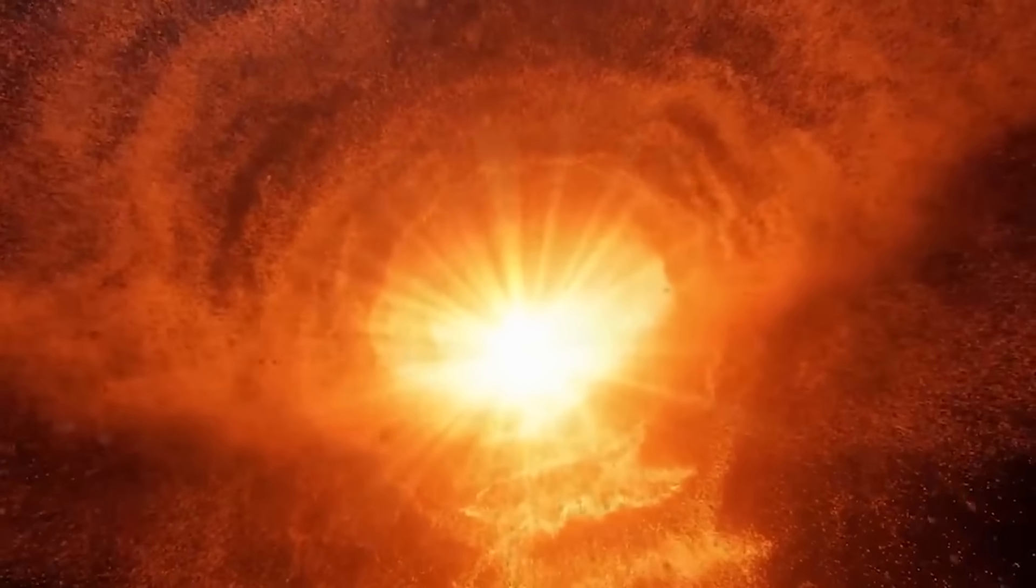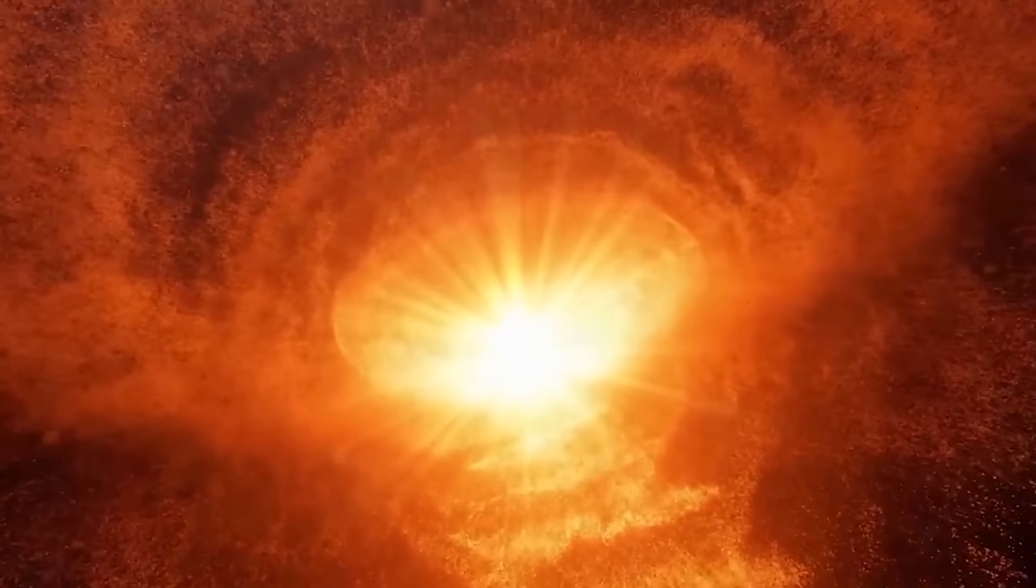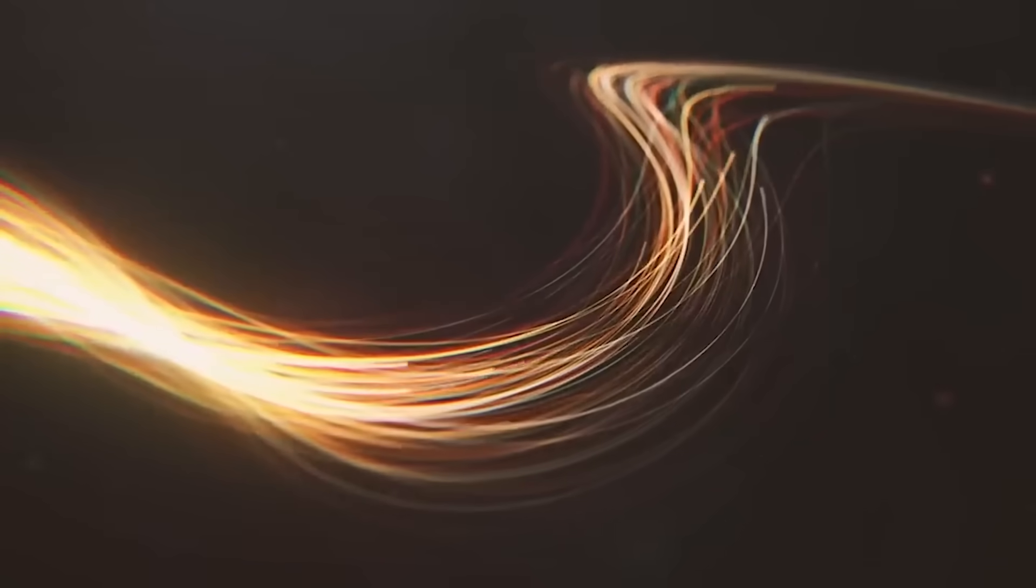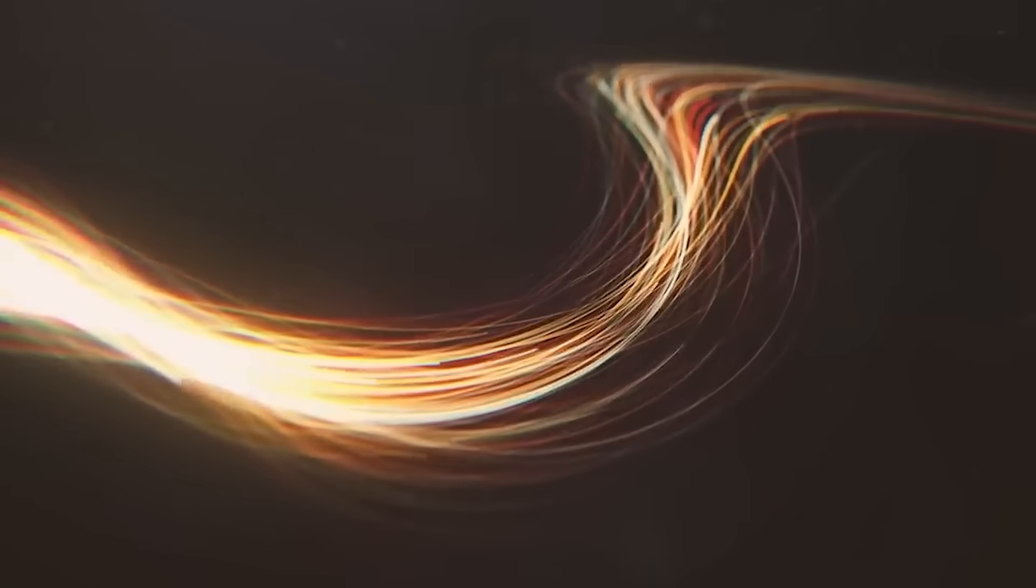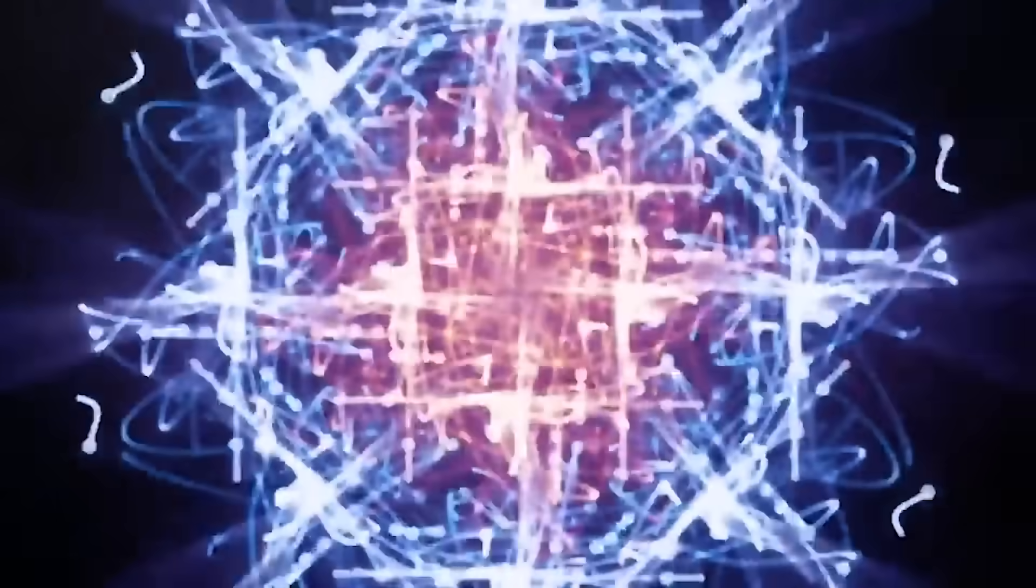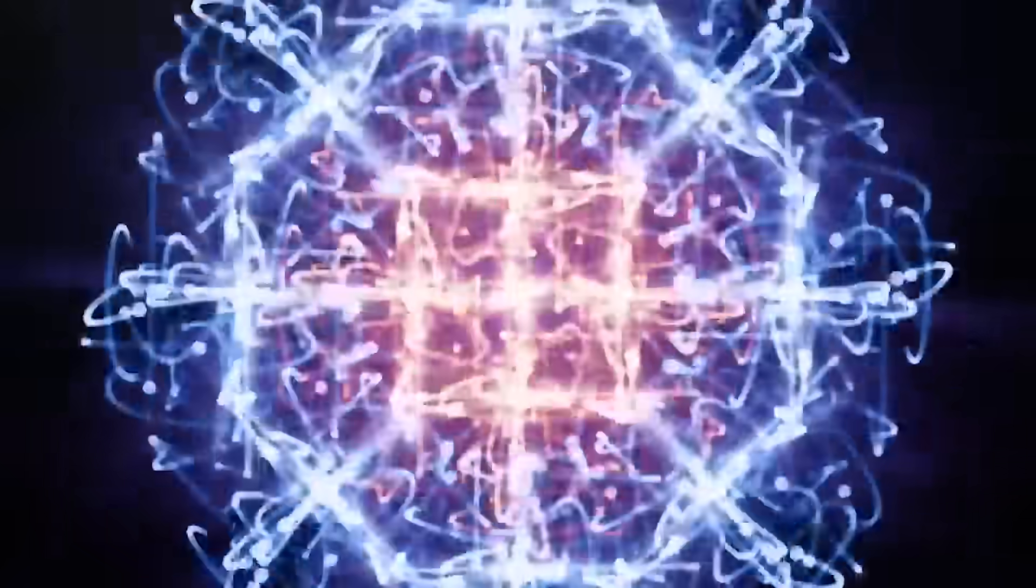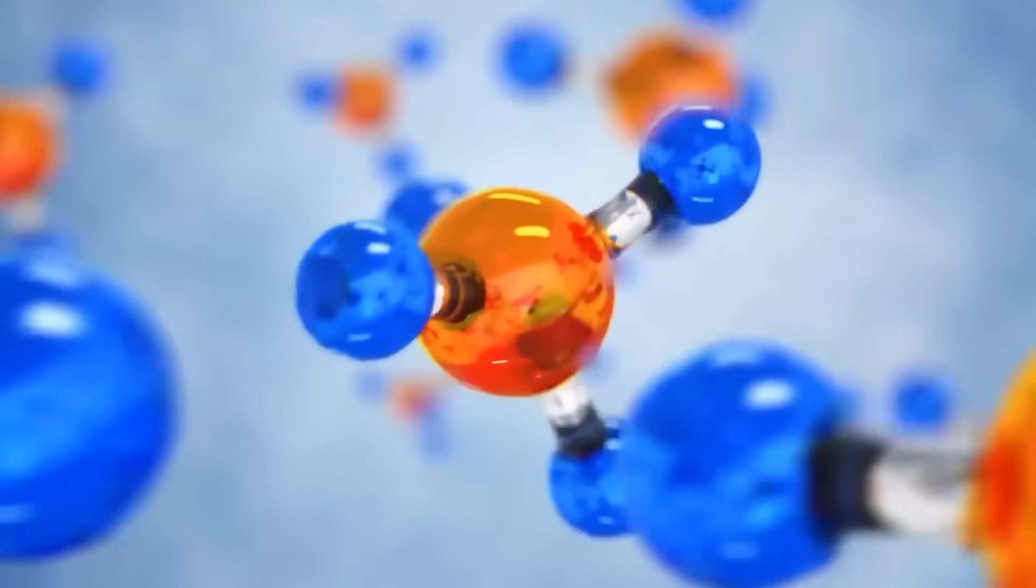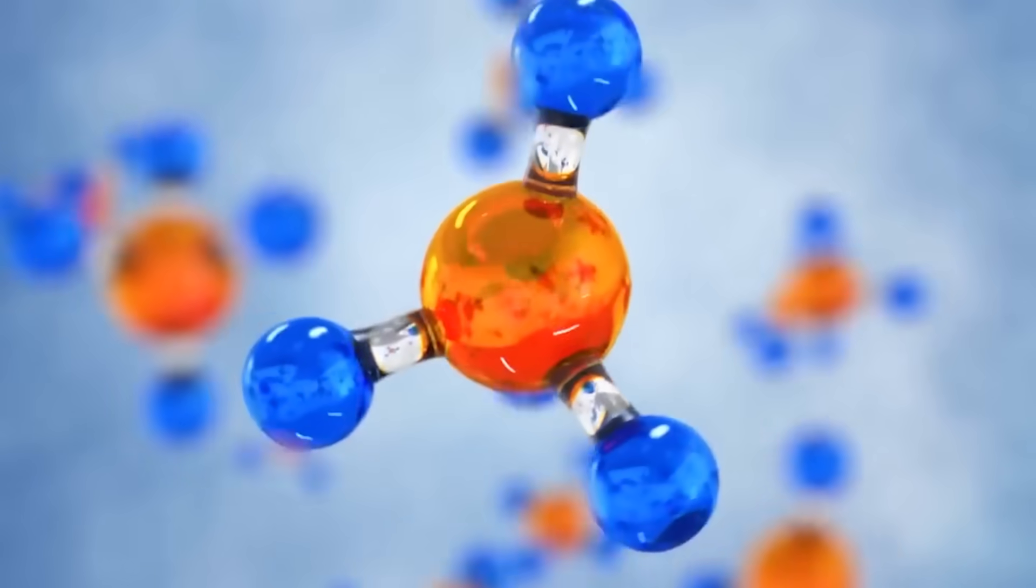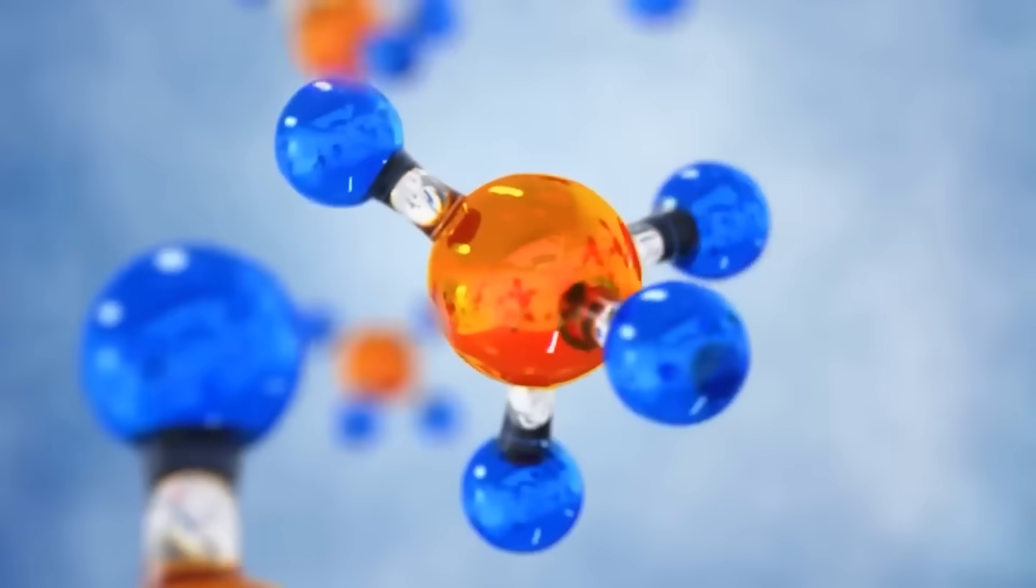Just imagine the early universe shortly after the Big Bang, a scorching dense mix of particles and radiation expanding at an astonishing rate. At this stage, there was no conventional light as we know it, because photons, the fundamental particles of light, constantly interacted with dense free protons and electrons, unable to traverse space freely.